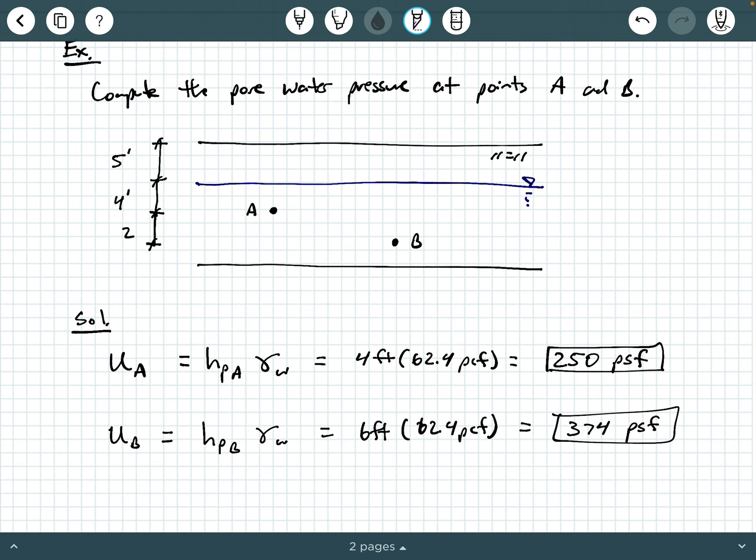Next, the distance, the horizontal distance between point A and point B does not come into play. The horizontal distance between two points when you're talking about pore water pressure is not a function of pore water pressure. Pore water pressure has to do with the height of water above a particular point. That's it.